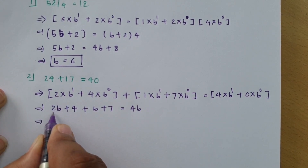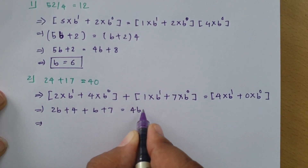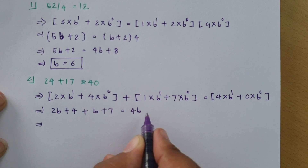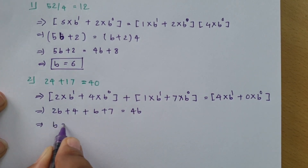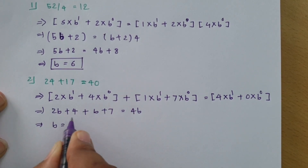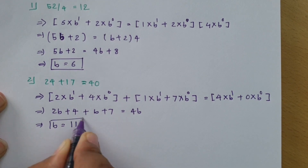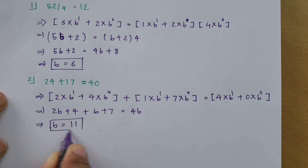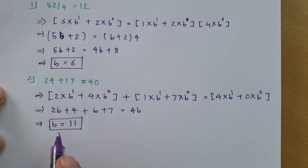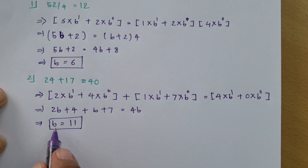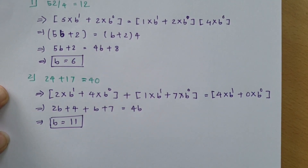Taking 3B to the right side: 4B − 3B = B, so B = 7 + 4 = 11. Therefore, the equation 24 + 17 = 40 is valid in the base 11 number system.